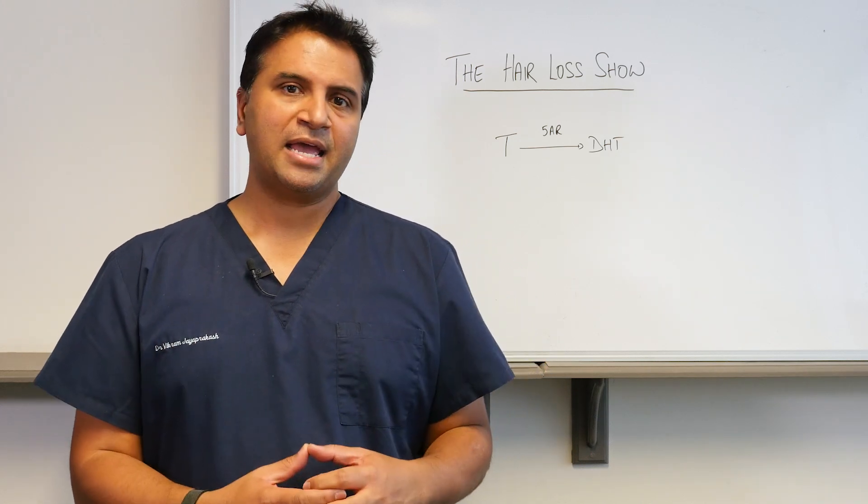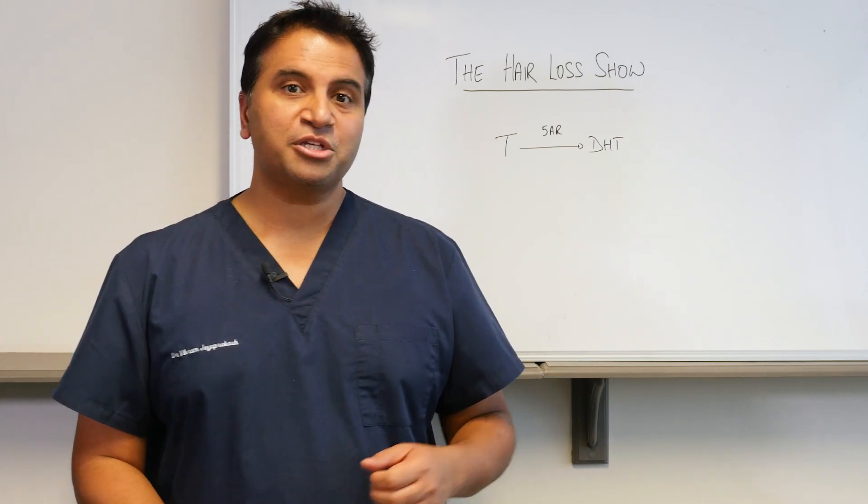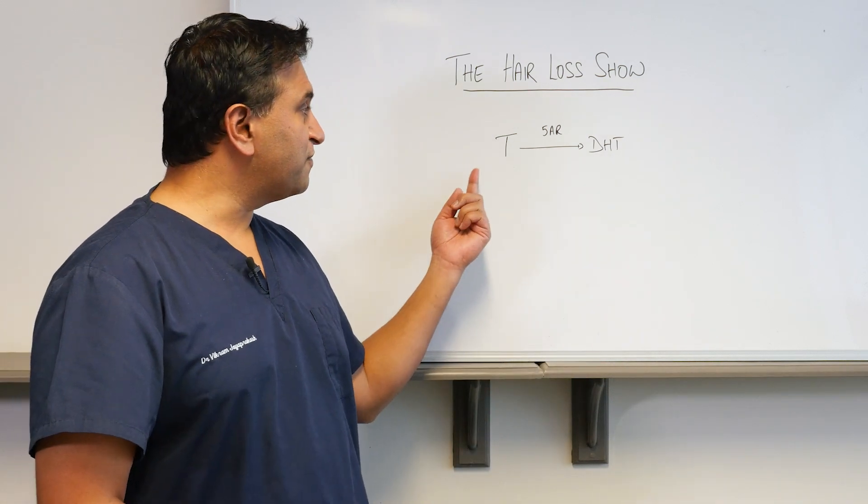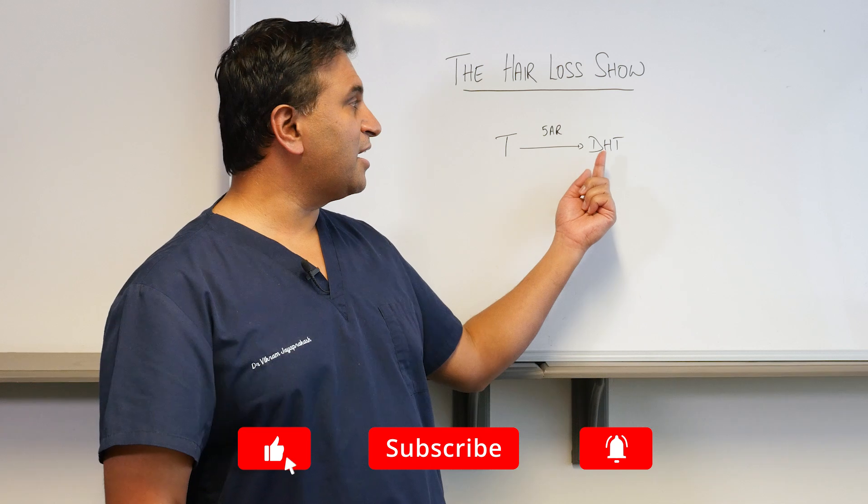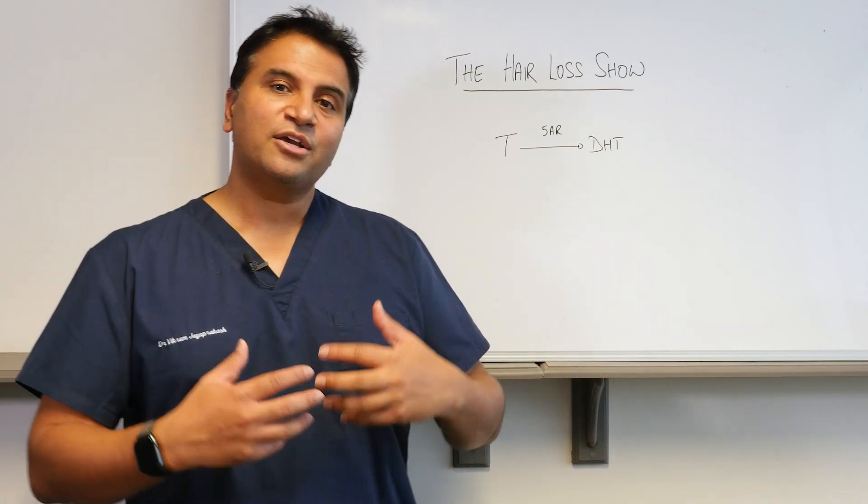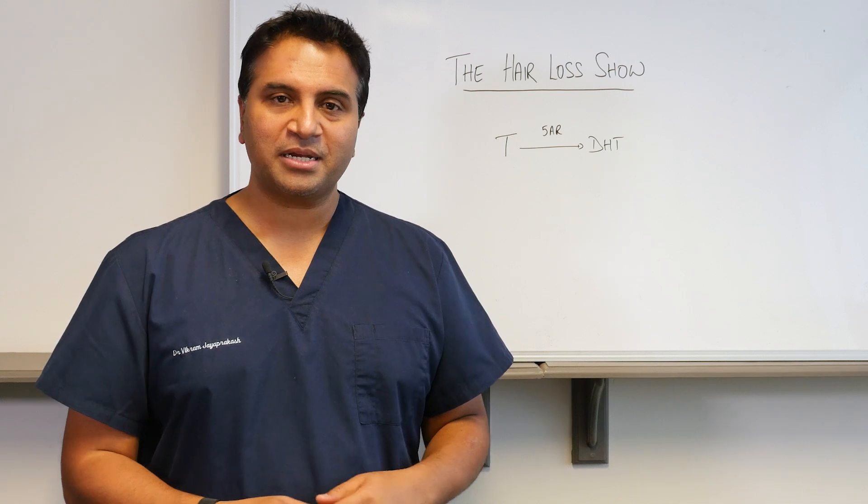So if we look at male pattern hair loss or androgenic alopecia, we know that there's a genetic condition but it results from the conversion of testosterone to dihydrotestosterone. If you have an elevated level of DHT it causes the hairs to thin out and fall out in a predictable pattern.